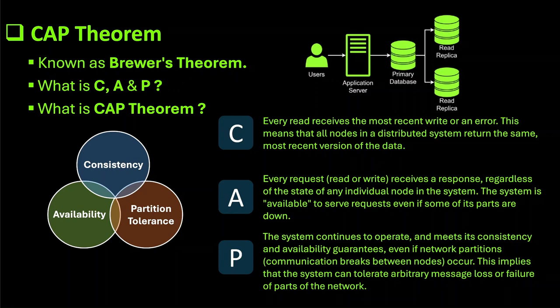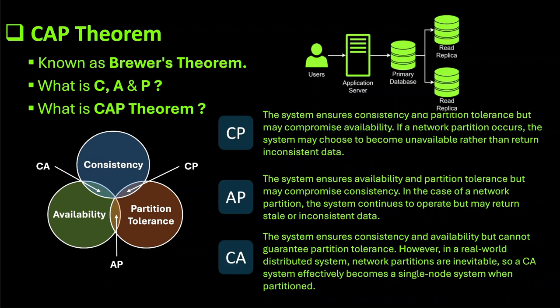So to answer what is CAP theorem: it is a fundamental principle in distributed systems that states it is impossible for a distributed data store to simultaneously provide all three of the following guarantees — consistency, availability, and partition tolerance. As you can see in the Venn diagram, only two of the attributes intersect each other at any given point in time. The CAP theorem also implies that under any circumstance you can have combinations of CA, AP, and CP while designing your system.